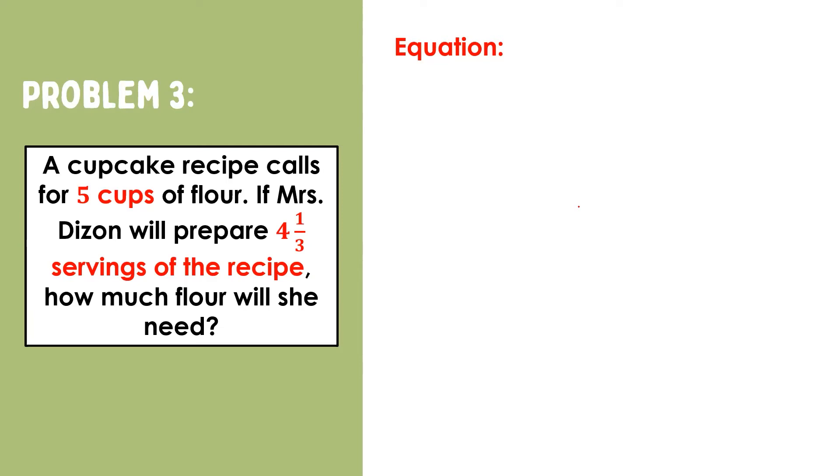This problem is almost the same as problem number two. In this problem, however, we are asked to find four-and-one-third of five. Recall that in multiplying fractions, all mixed numbers should be rewritten first as improper fractions before we can proceed with multiplication.